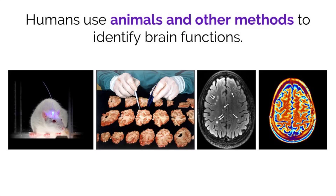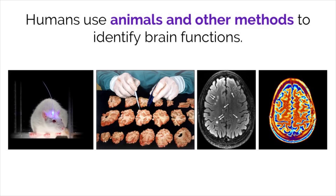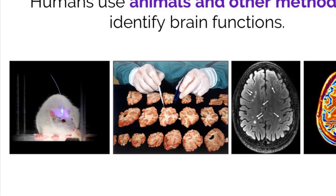You were just told a bunch of information about how the brain works, but how do scientists know all of this? Humans have many different ways of figuring out what certain parts of the brain are responsible for. These methods include animal experimentation, autopsies, lesions, and fMRI science.